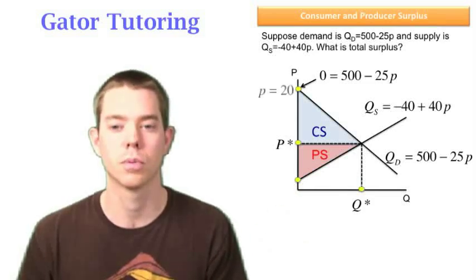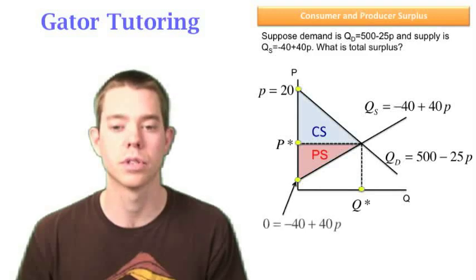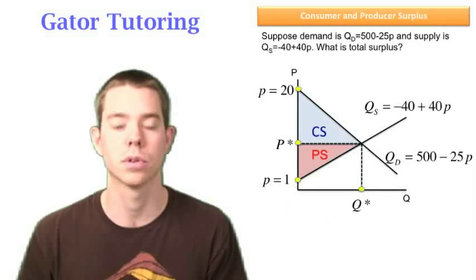So we solve for P to be equal to 20 when quantity demanded equals zero. Well, this next point, that's where quantity supplied equals zero. So we're going to do the same process, and we solve for P to be equal to $1 when quantity supplied is equal to zero.